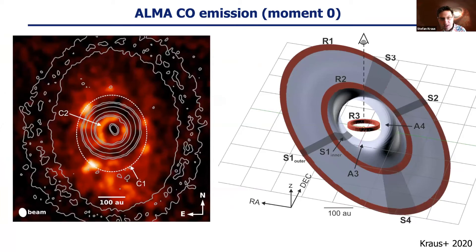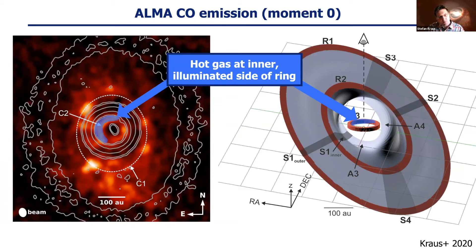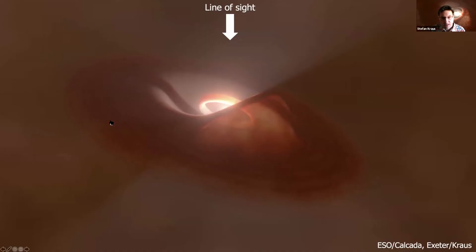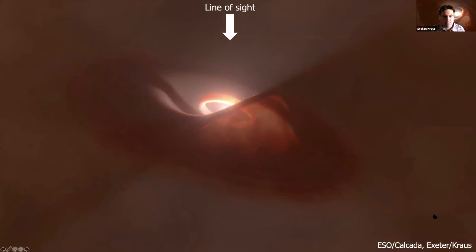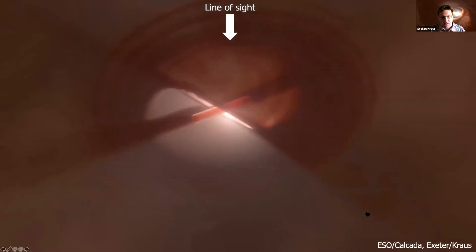In line emission, we see excess CO emission at the northern part of the ring. This is reproduced by the model because we see hot gas at the inner surface of the ring. Since we look onto the ring, the northern side is where we can see the inner part of the ring and therefore the hot gas heated by the star, while on the southern part we only see the colder outer part of this optically thick ring. Here is a movie showing the whole geometry we used, including the disk warp, rotating around the system with the axis towards Earth vertically.